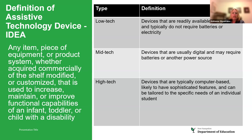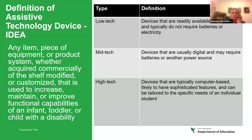Today we'll go through different levels and give examples. Low-tech items are ones that are readily available and inexpensive — they typically don't require batteries or electricity. Mid-tech devices are usually digital and may require batteries or another power source. High-tech items are typically computer-based, likely to have sophisticated features, and can be tailored to the specific needs of an individual student.